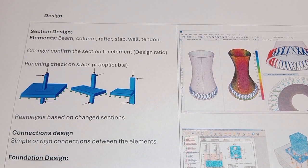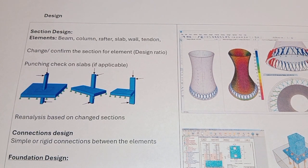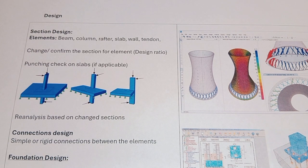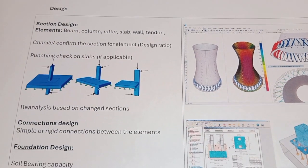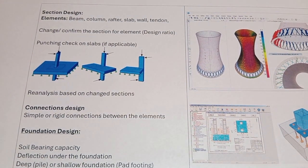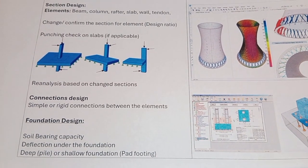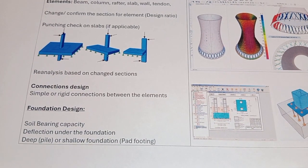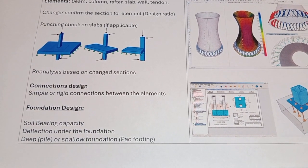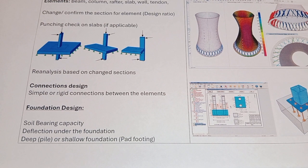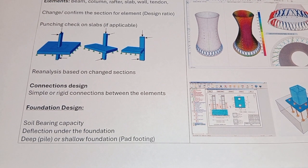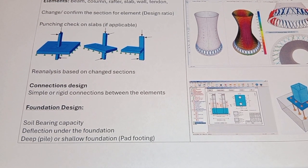Remember: after analysis, when you go to design and change sections — because sometimes default sections are very strong and sometimes very weak — always re-analyze the structure to get the most accurate results. When you change the element size, the stiffness of the structure changes, and the self-weight changes too, which can have a significant effect.